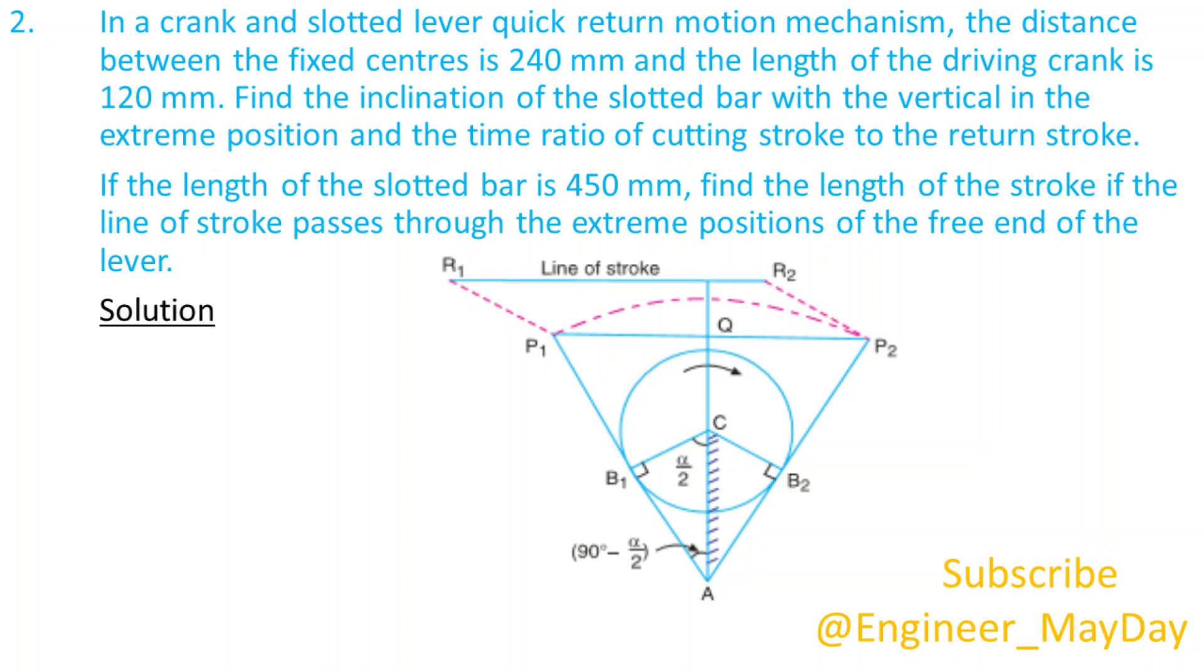Solution. Given: AC equals 240 millimeters, CB1 equals 120 millimeters, AP1 equals 450 millimeters.